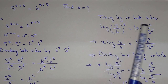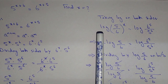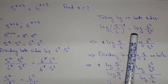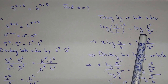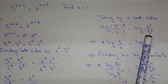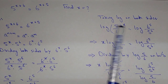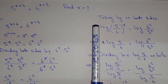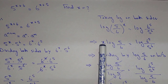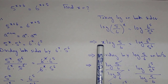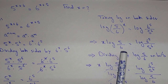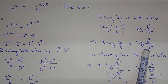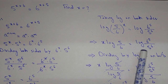Now we take the log of both sides: log[(5/6)^x] = log[6^5 / 5^6]. Using the power rule, the exponent comes down in front, giving us x · log(5/6) = log(6^5 / 5^6).